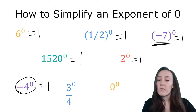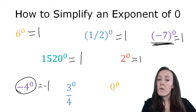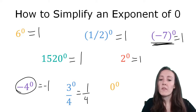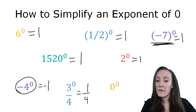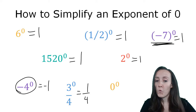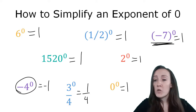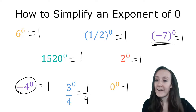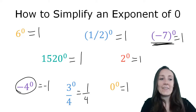Similarly, if you have three to the zero power over four, the zero power is only applying to the three. So the simplified answer would be one fourth, because three to the zero power is one, but four doesn't have any exponent so it just stays as four. Zero to the zero power — usually we say equals one, however there are some arguments that say it may equal something else, and I'll explain that later in this video.